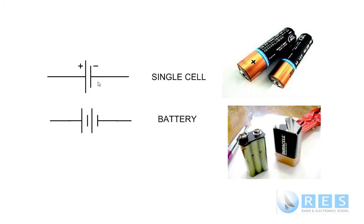The first two symbols we need to discuss are the electric cell and the single cell. A single cell battery like a AAA cell is not a battery — it is a cell. There is only one set of electrolyte and one set of plates in a single cell. That is the symbol for a single cell, with or without the positive and negative symbols. The smaller terminal on the symbol is negative, and the longer terminal is positive.